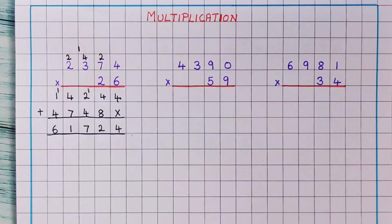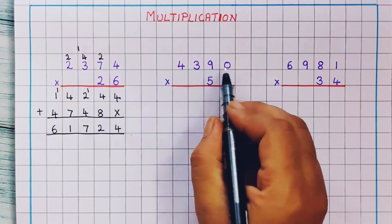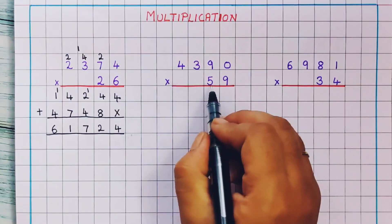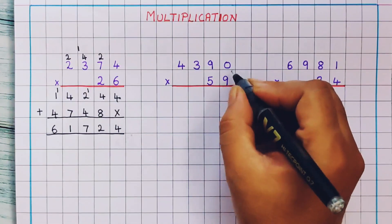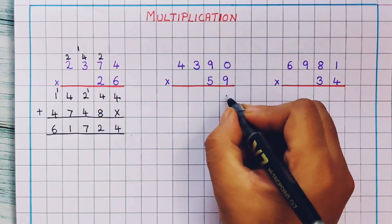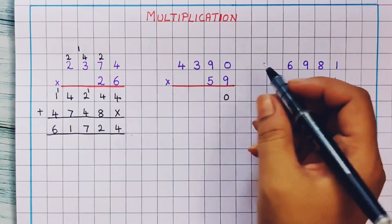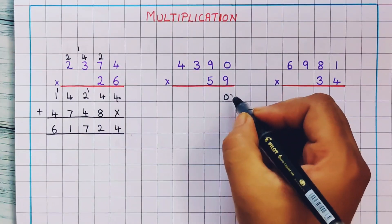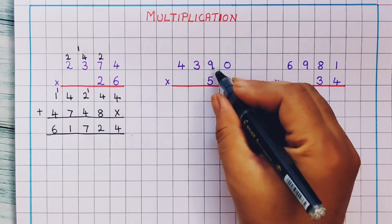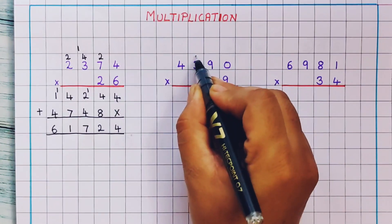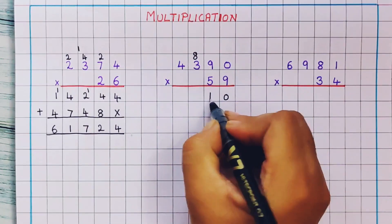Now let's do the next problem: 4,390 into 59. Let's start the multiplication with 9. 9 0's are 0 — anything into 0 is 0. 9 9's are 81, so here I will put 8 and 1 — 81.